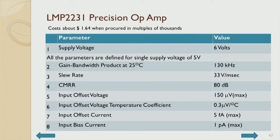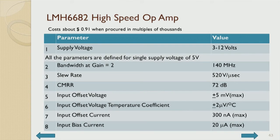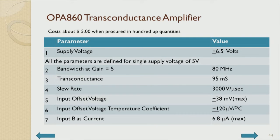A precision op amp has a much higher slew rate and much lower input offset voltage, making it useful for low-frequency biomedical applications. A high-speed op amp has a gain-bandwidth product where, at a gain of 2, the bandwidth is about 140 MHz. At a gain of 5, the bandwidth is about 80 MHz — illustrating the gain-bandwidth tradeoff.